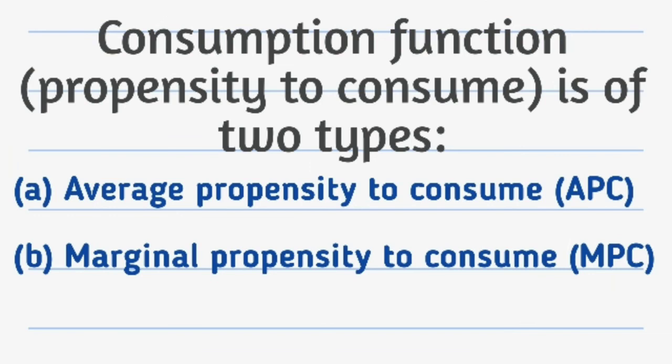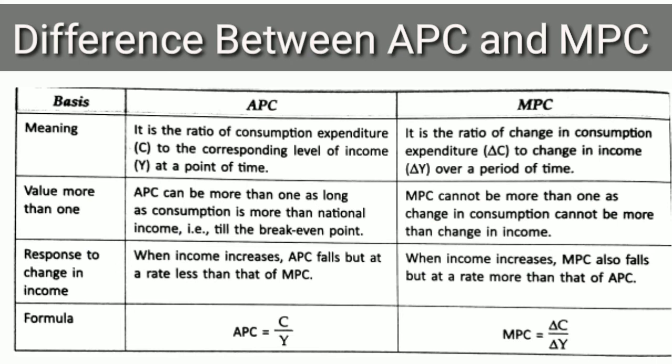Now we move on to the two types of consumption function. They are average propensity to consume and marginal propensity to consume, in short APC and MPC. We can better understand them by differentiating them. APC is the ratio of consumption expenditure to the level of income, that means C divided by Y equals to APC, whereas MPC is the ratio of change in consumption to the change in income, that means change in C divided by change in Y gives MPC.